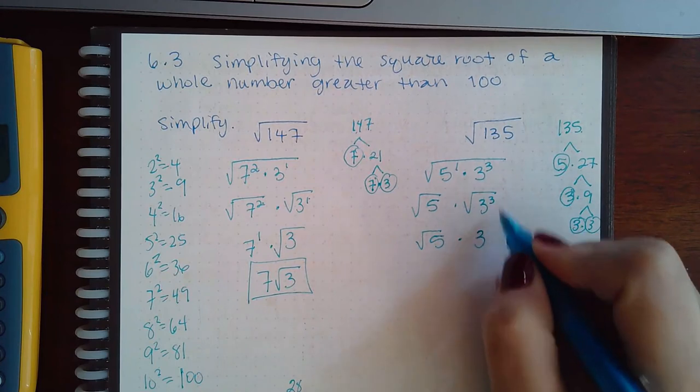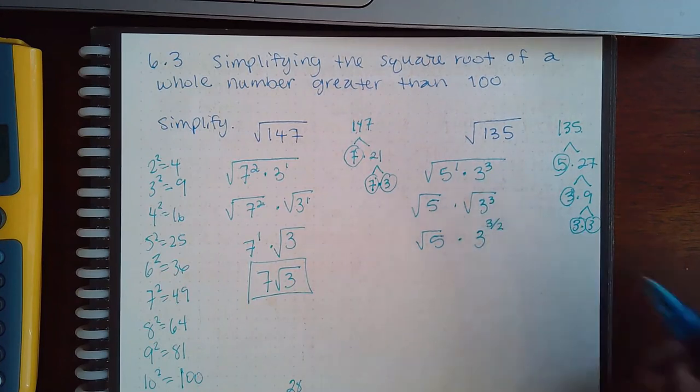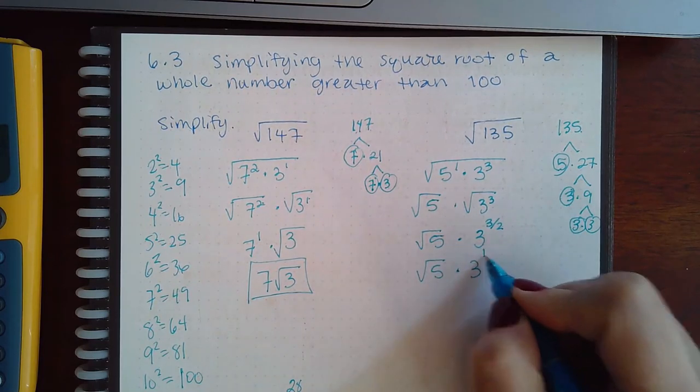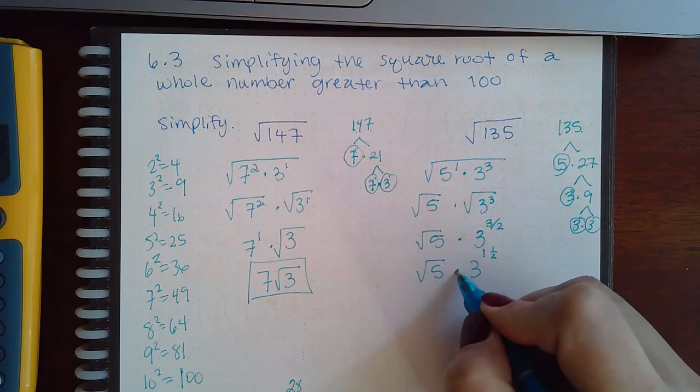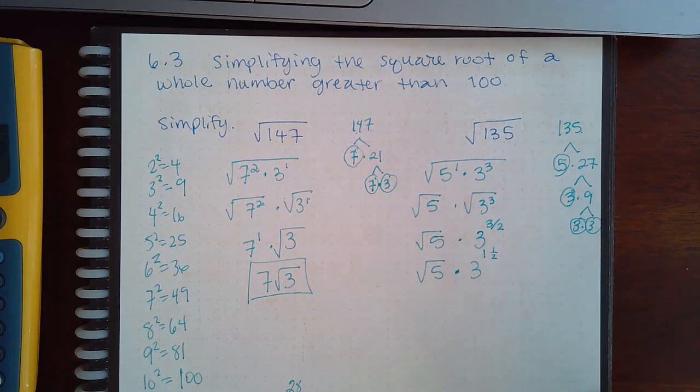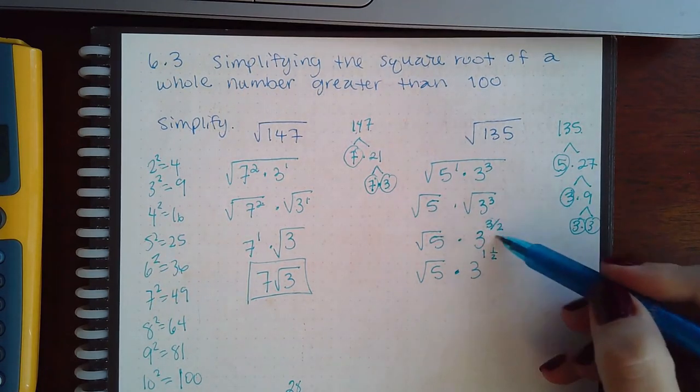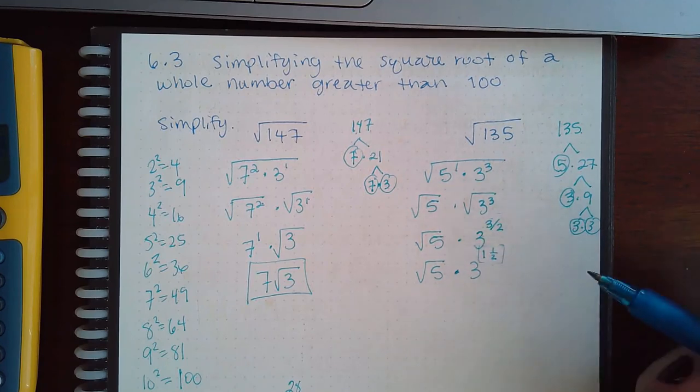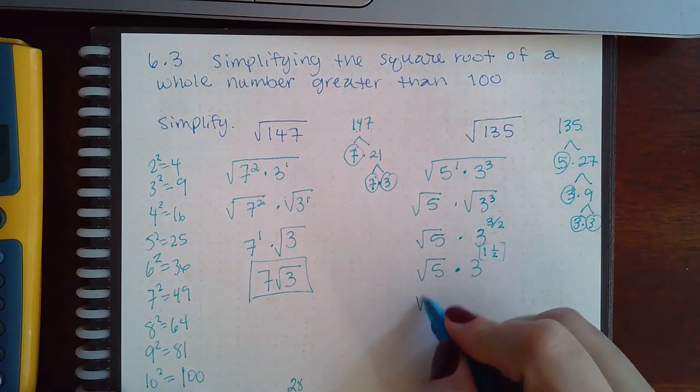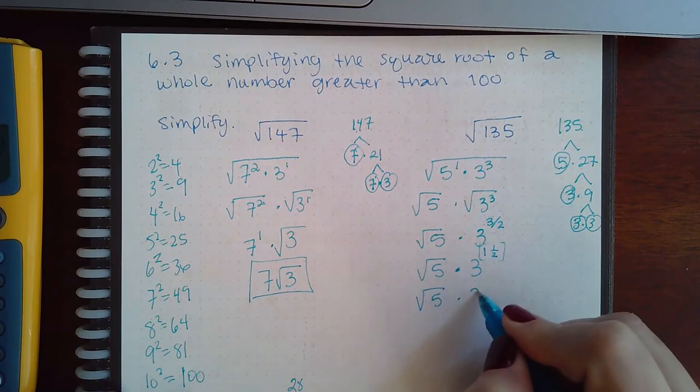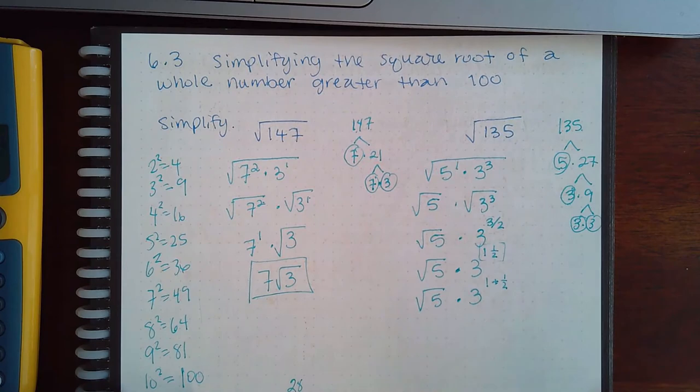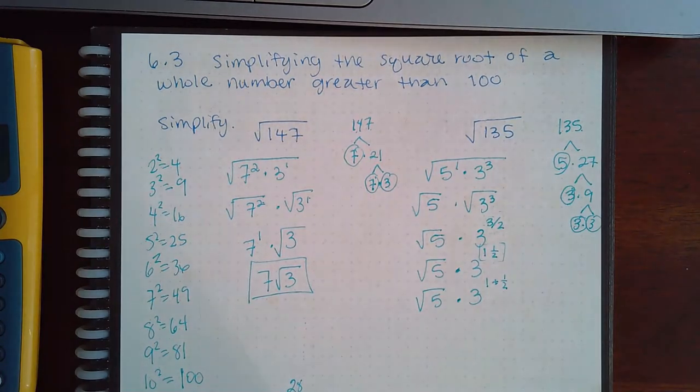But the square root of 3 to the first power, 3, and then over 2—what do we get when we do that? We end up getting 3 to the 1 and a half. If I change it to a mixed number, this is an improper fraction. If I change it to a mixed number it looks like this. Now remember what a mixed number means: it means that that's actually 1 plus a half.